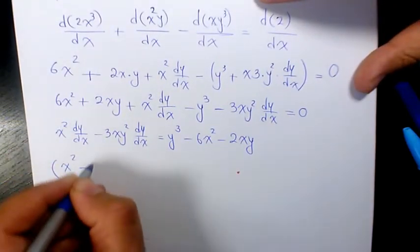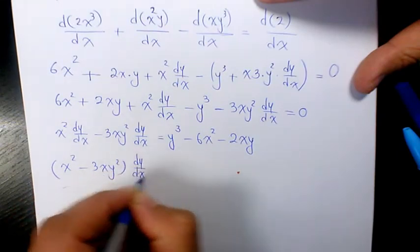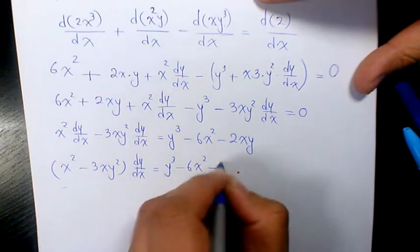Factoring out dy/dx, we get (x² - 3xy²) dy/dx = y³ - 6x² - 2xy.